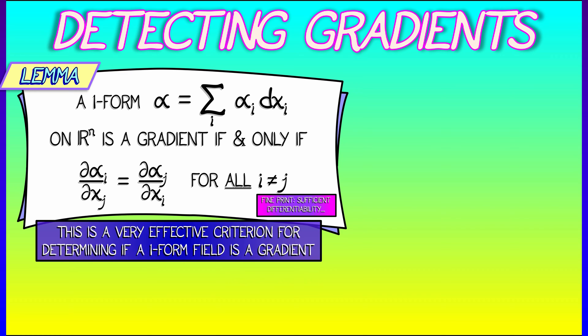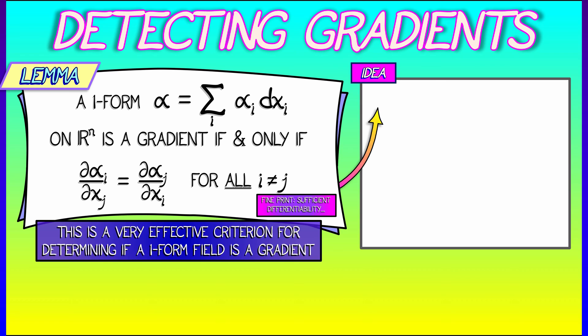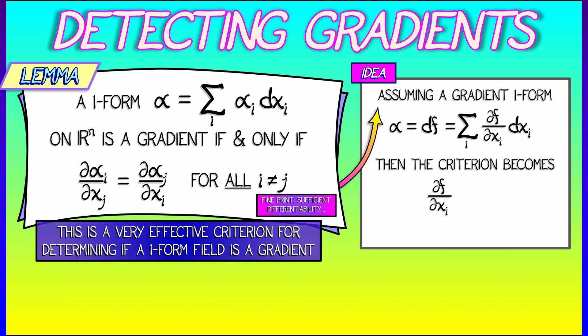Now, this is really effective for showing that what you've got is a gradient. But why? Well, here's the idea behind it. Let's say that you did have a gradient. Let's say that alpha was of the form df. For some function f, that means that alpha_i is the partial of f with respect to x_i. Now, what does this criterion become? Well, I take alpha_i, that is partial f partial x_i, and differentiate that with respect to x_j.